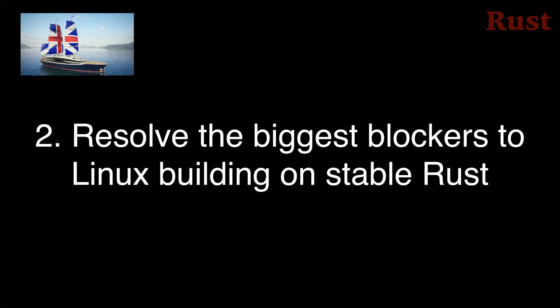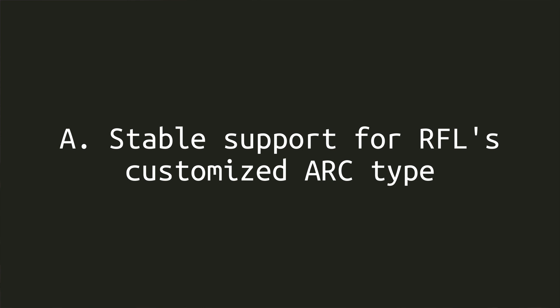Flagship Project 2 is to resolve the biggest blockers to Linux building on the stable Rust compiler. Part A is stable support for Rust for Linux's customized atomic reference counter type. Pointer types in Rust's standard library enjoy access to some unstable features that make them more ergonomic. Stabilizing these features will allow Rust for Linux's Arc to do the same things, like being used in a method for self types and coercing dyn types to invoke methods through dynamic dispatch.